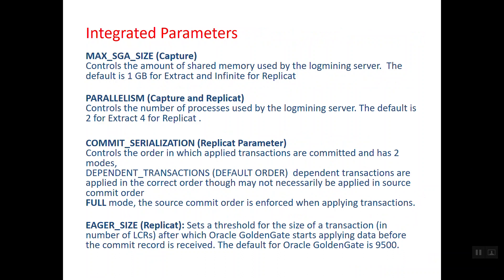Commit serialization is a parameter you generally don't want to change. In async mode, multiple transactions are applied with multiple applier processes. The default value is dependent transactions — it checks dependent transactions. If set to full mode, transactions are applied in sync mode only, meaning parallelism won't be beneficial since everything is applied in serial order.